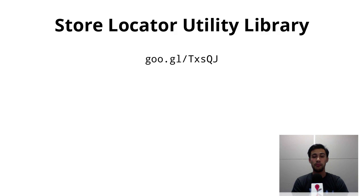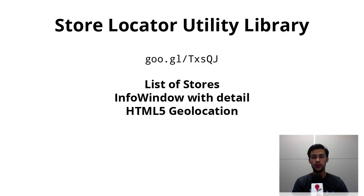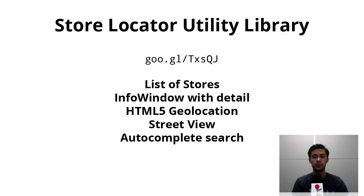You get many things for free including a list of nearby stores, an info window that shows details about the selected store, HTML5 geolocation which will determine a good initial viewport for the user, along with street view, autocomplete search like on maps.google.com, and importantly driving directions.